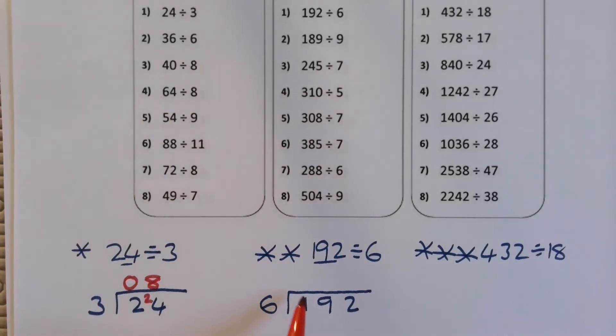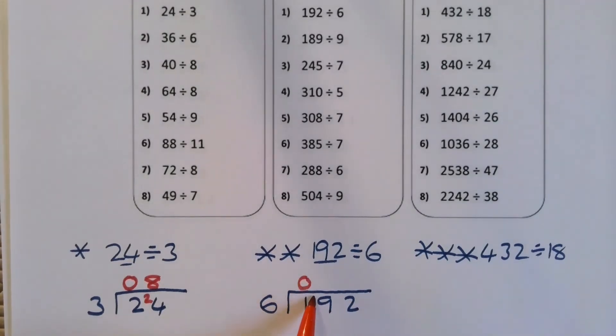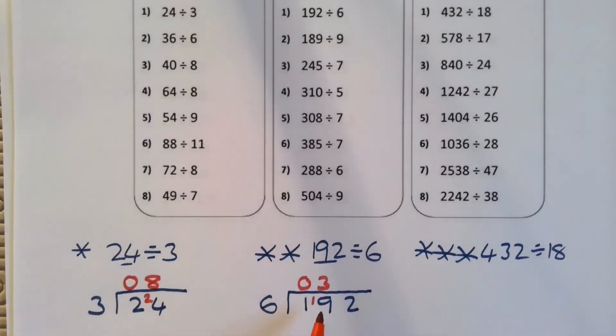So six is into one, that doesn't go, carry the one over, six is into 19. Let's do our six times table, so six, 12, 18, so that's three times. And what's left over from 18 to get to 19? Just the one, so carry the one, six into 12, two. So the answer is 32.